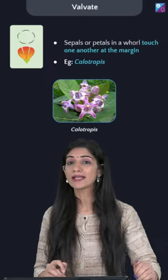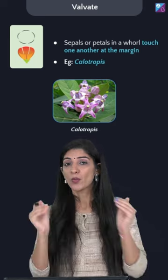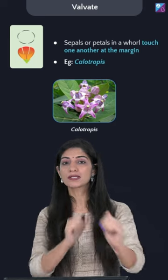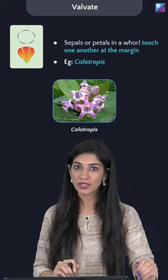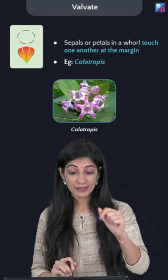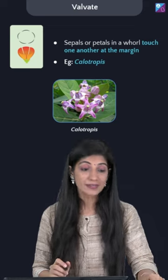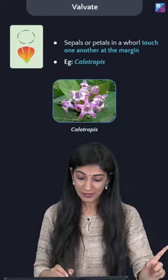Today let's discuss the different types of estivation along with examples. The first type is valvate estivation, where only the margins of petals or sepals are touching each other. The classic example is Calotropis.